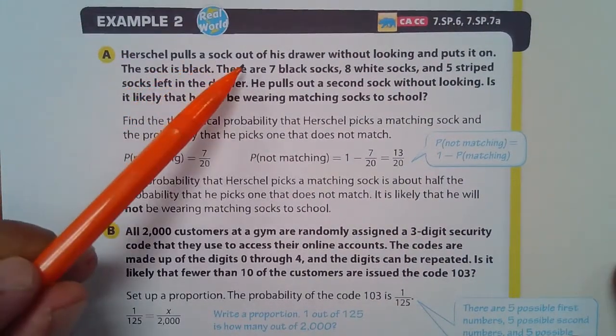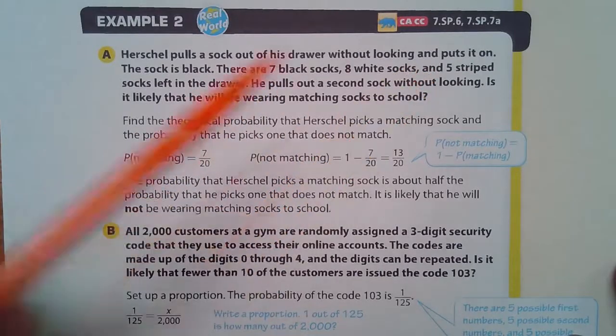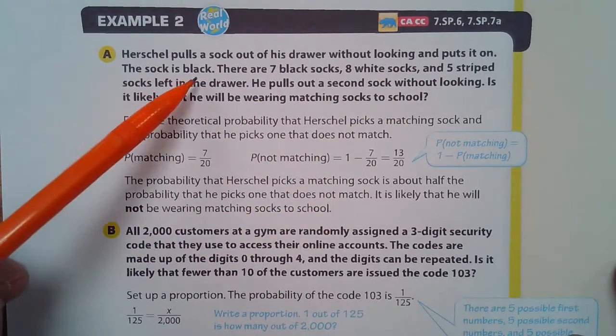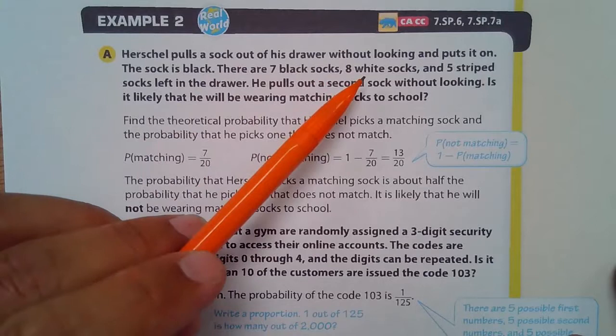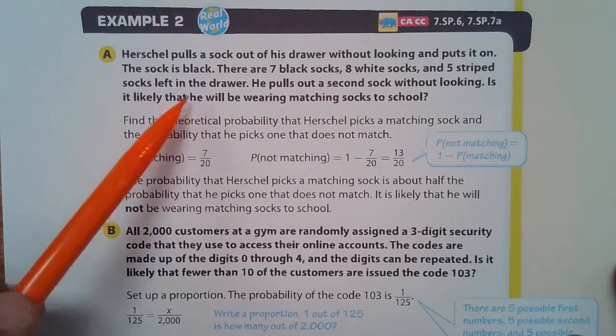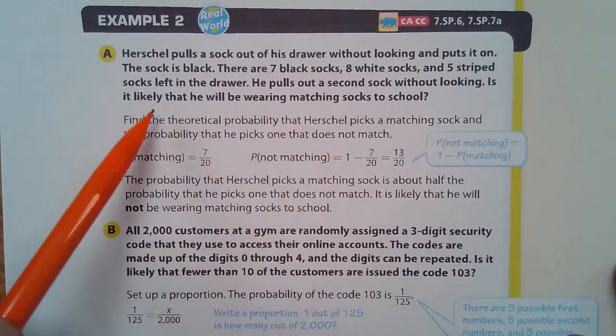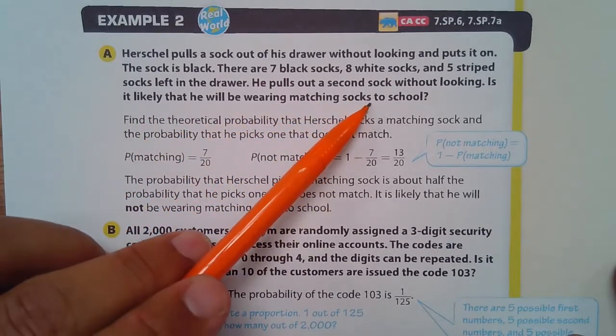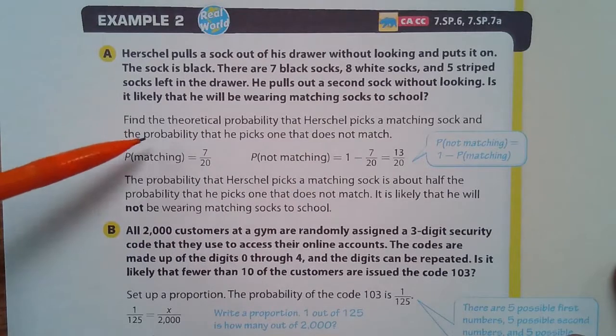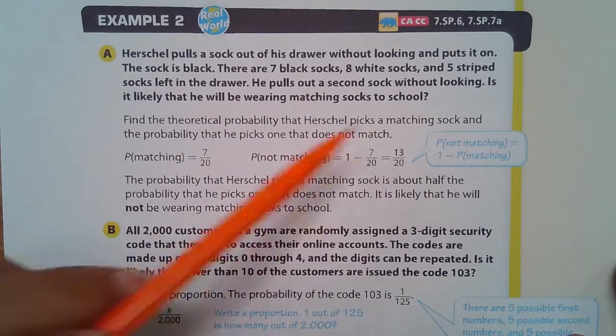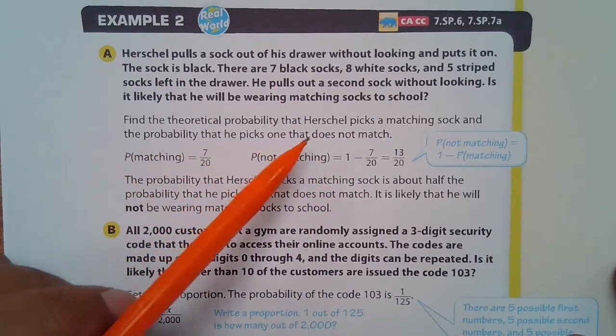Herschel pulls a sock out of his drawer without looking and puts it on. The sock is black. There are seven black socks, eight white socks, and five striped socks left in the drawer. He pulls out a second sock without looking. Is it likely he will be wearing matching socks to school? Well, let's find the theoretical probability that Herschel picks a matching sock and the probability that he picks one that does not match.